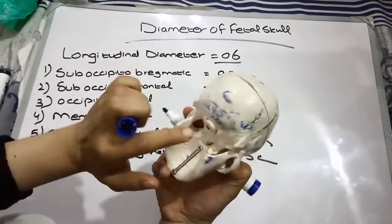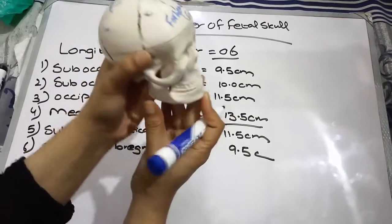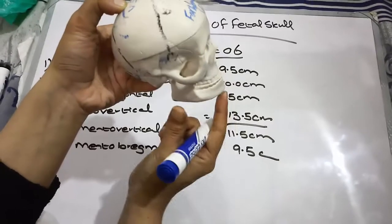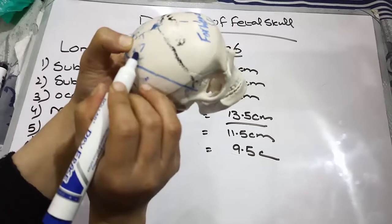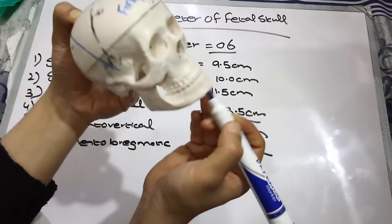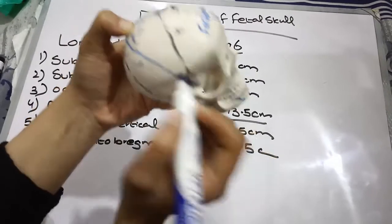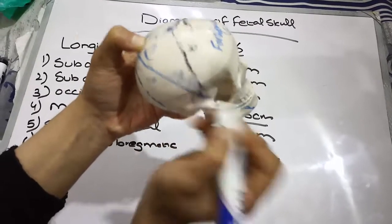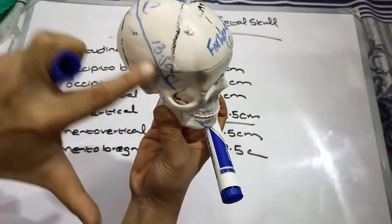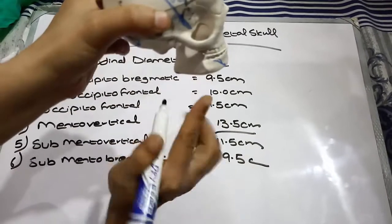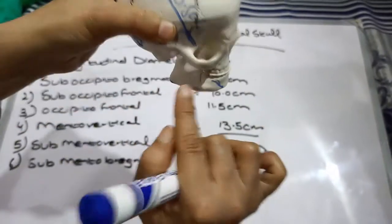The longitudinal diameter from the mentum to the highest point of the vertex is the largest longitudinal diameter, measuring 13.5 cm. The diameter between the sub-mentum and the vertex is 11.5 cm. The diameter between the sub-mental region and the vertex is also noted as 11.5 cm.